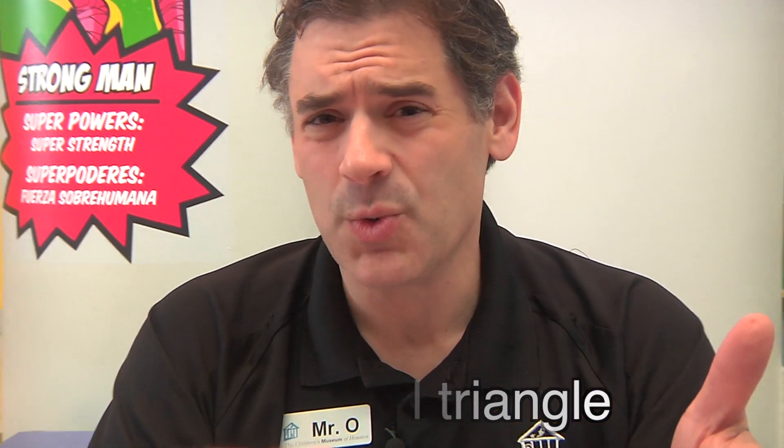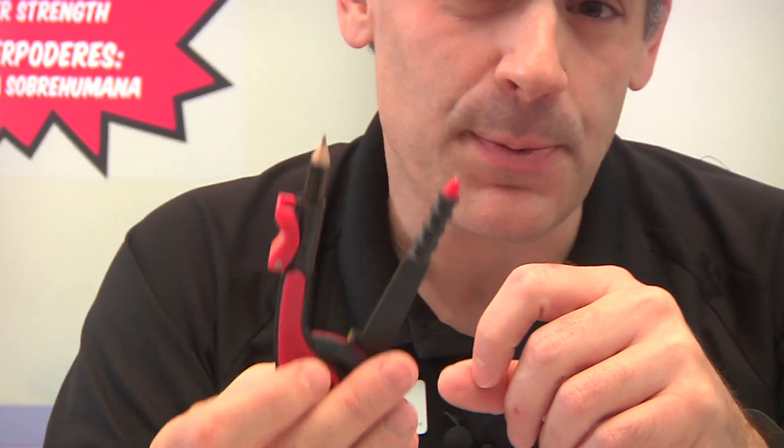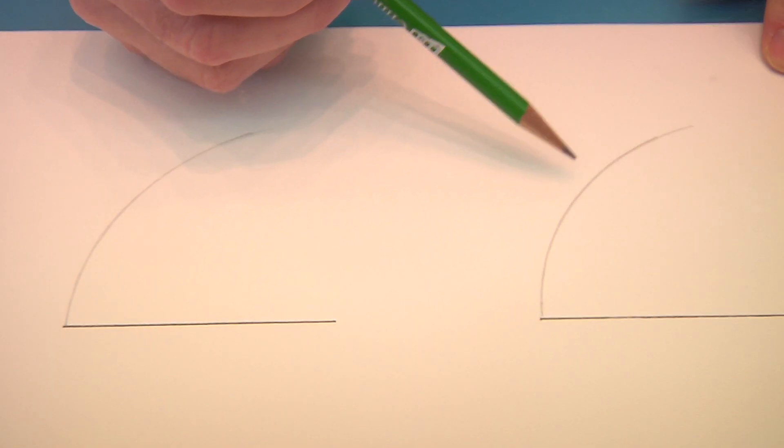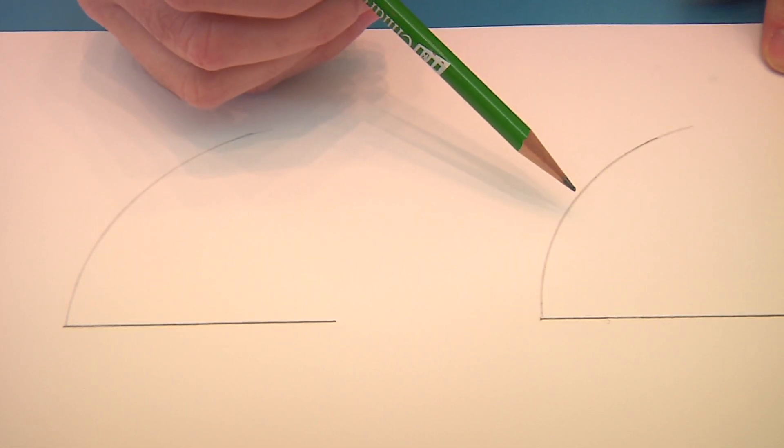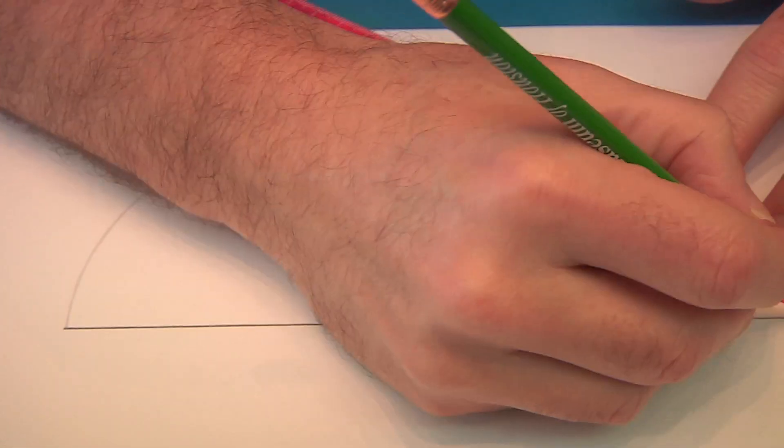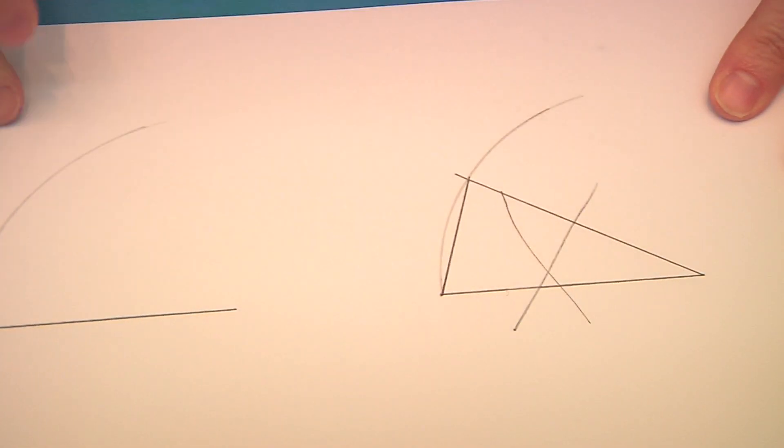So why does this work? Well, basically you're using the compass to show you all the possible locations where you can draw a line that's the same length as the original line. So anywhere along this arc, you can draw a line that's the same length as the first line. But if I were to draw the line, say, here, then the other line wouldn't be the same length. So no equilateral triangle.